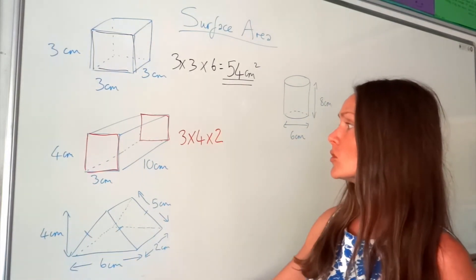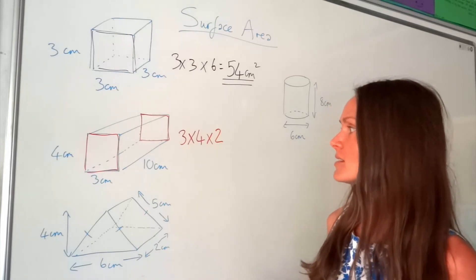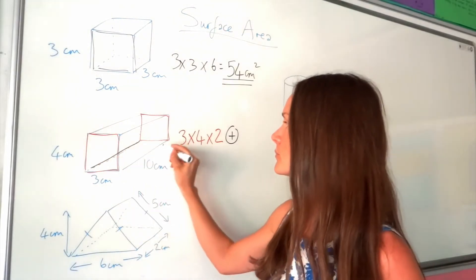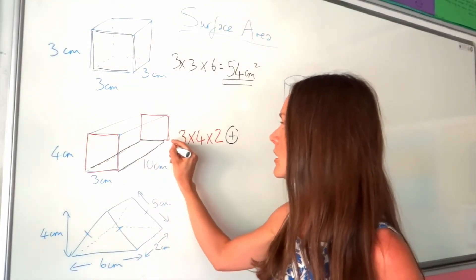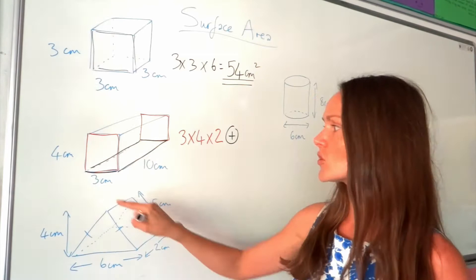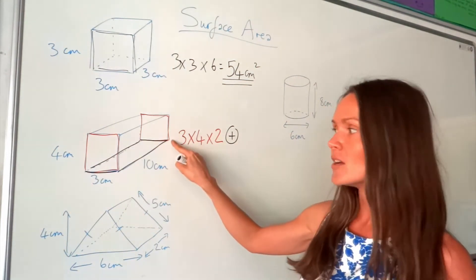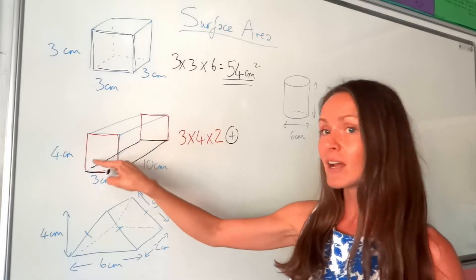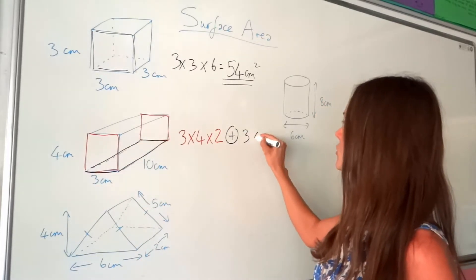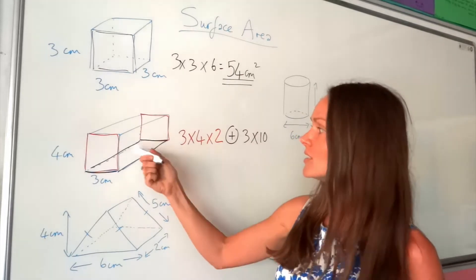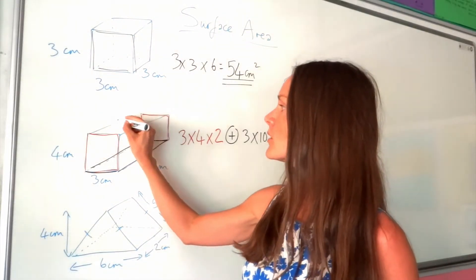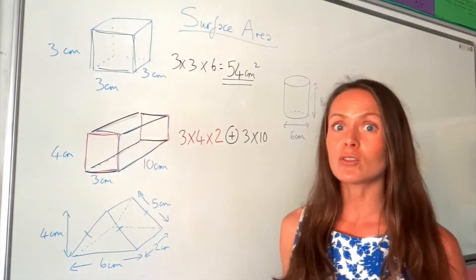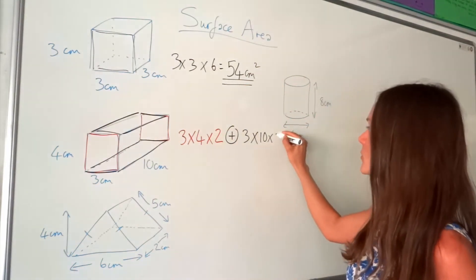Now I'm going to look at 2 of the other surfaces in this cuboid — the base this time. So it's another rectangle, except this time the dimensions are 3 and 10. So we're doing 3 times 10 to work out the area of that rectangle. Just like before, there's another side that's identical to this one — it's the one that's opposite, this one up here. So again I'm going to multiply that answer by 2.